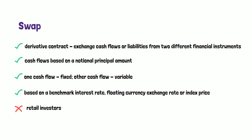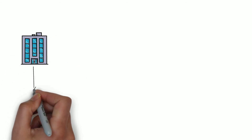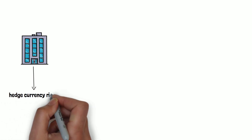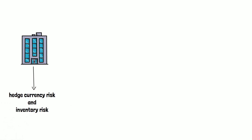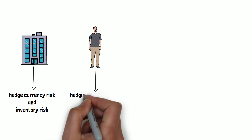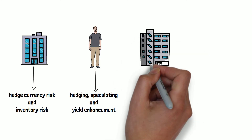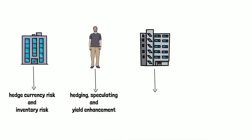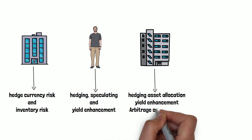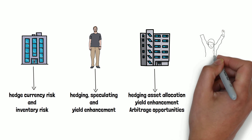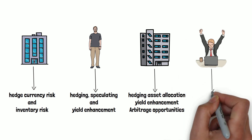Now that we have covered the basic concepts of derivative instruments, let us understand the usage of derivatives for different users. Corporations use derivatives to hedge currency risk and inventory risk. Individual investors use derivatives for speculation, hedging, and yield enhancement. Institutional investors use derivatives for hedging, asset allocation, yield enhancement, and to avail arbitrage opportunities. Dealers use derivatives for hedging, position taking, exploiting inefficiencies, and earning dealer spreads.